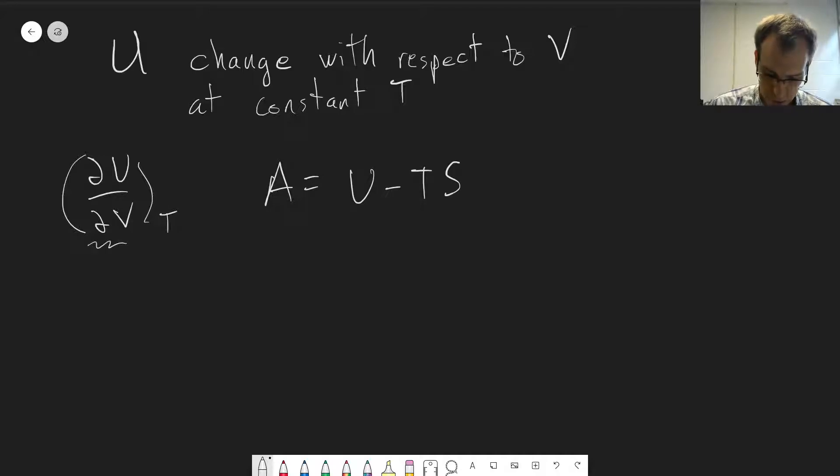And we want a partial derivative with respect to V at constant temperature, so let's do that for the whole equation here. Take the partial derivative with respect to V at constant T, so we get dA/dV at constant T is equal to dU/dV at constant T minus,